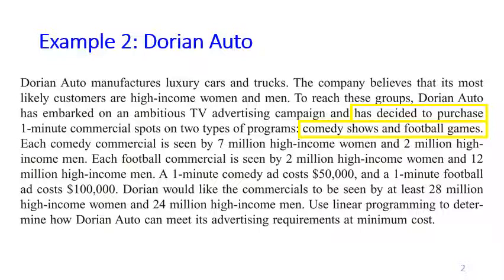Notice here that it says has decided to. So this is a clue for the decision variable, because this is something that Dorian Auto needs to decide or has already decided. So this is really a strong clue for decision variables.